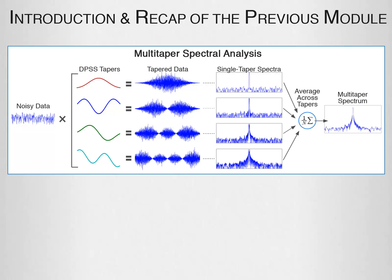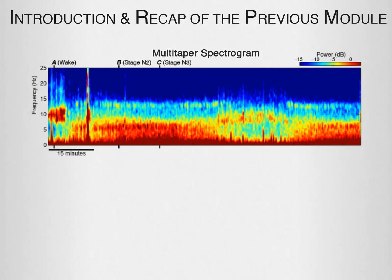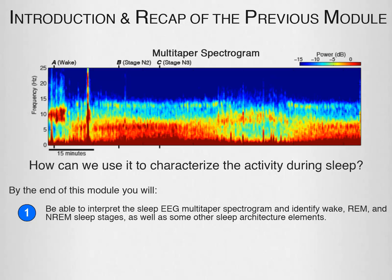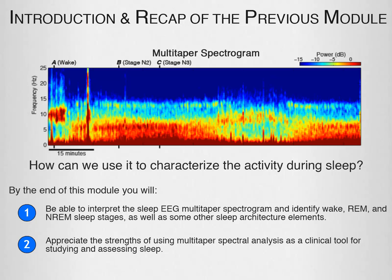Now that we understand what multi-taper spectral analysis is and have this way of visualizing EEG data, how can we use it to characterize the activity during sleep? This module will focus on this question. By the end of this module, you will be able to interpret the sleep EEG multi-taper spectrogram and identify wake, REM, and non-REM sleep stages as well as some other sleep architecture elements, and appreciate the strengths of using multi-taper spectral analysis as a clinical tool for studying and assessing sleep.